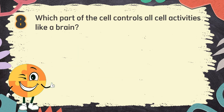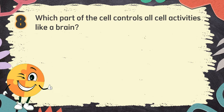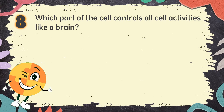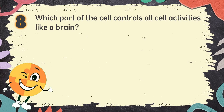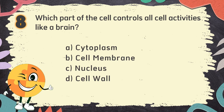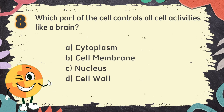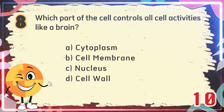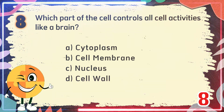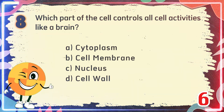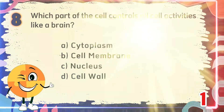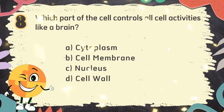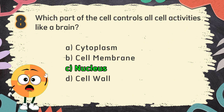Number 8: Which part of the cell controls all cell activities, like a brain? The choices are: A. Cytoplasm, B. Cell membrane, C. Nucleus, D. Cell wall. The correct answer is C. Nucleus.